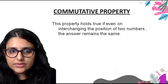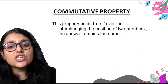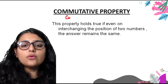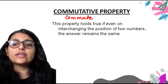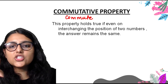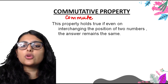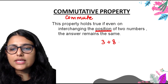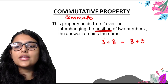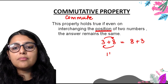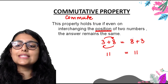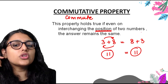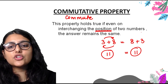Next is our commutative property. This property holds true if, even on interchanging the positions of two numbers, the answer remains the same. The word 'commutative' comes from 'commute', meaning to travel or change position. For whole numbers, for example, 3 plus 8 equals 8 plus 3 — both give 11. Now we are going to check addition, subtraction, multiplication, and division on integers.